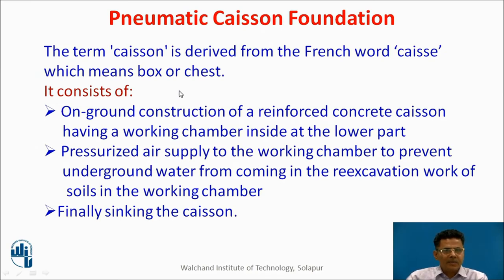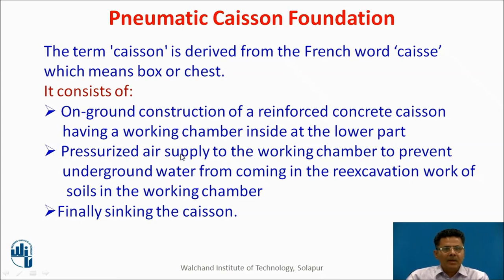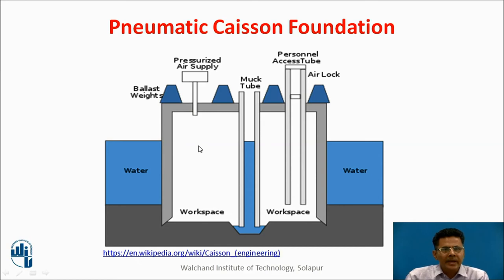Now let us discuss pneumatic caisson foundation. The term 'caisson' is derived from the French word 'caissé', meaning a box or chest. It consists of an above-ground construction of a reinforced concrete caisson with a working chamber in its lower part, with pressurized air supplied to the working chamber to prevent underground water from entering during excavation, and finally sinking the caisson. Here, the pressurized air supply arrangement, workspace, water level, and river bed can be observed. Workers dig at the curb and the caisson is lowered using personnel access shafts or tubes.